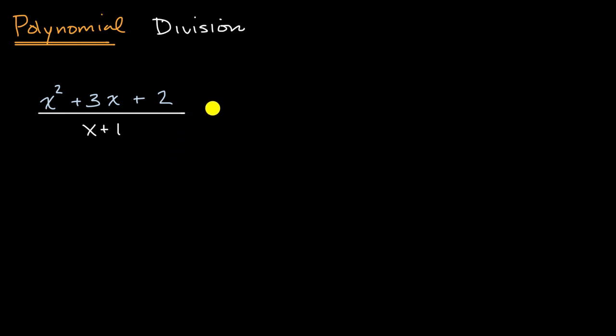Well, one way to approach it is we could try to factor x squared plus three x plus two, and we've done that multiple times. We think about what two numbers add up to three, and if I were to multiply them, I'd get two. And the ones that might jump out at you are two and one.